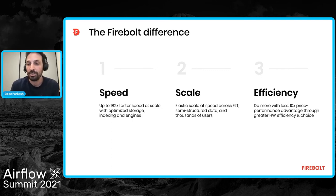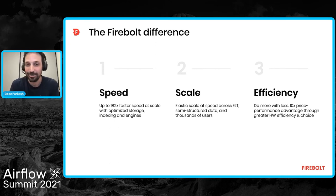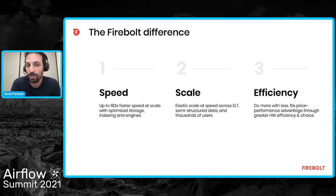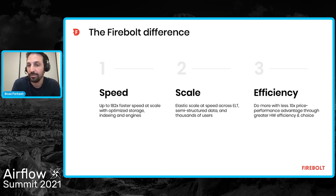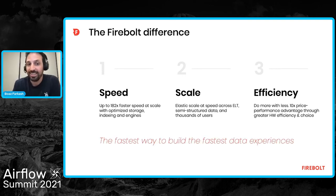Scale: we're built on an elastic decoupled storage and compute architecture, so it's easy to scale with a few clicks and assign the right workloads to the right hardware. And most importantly, efficiency: Firebolt is not just fast and scalable — we know how to do that without being very CPU-hungry, which reduces costs and suddenly allows you to build data applications that were often out of budget before. We see ourselves as the fastest way to build the fastest data experiences.